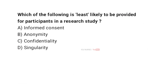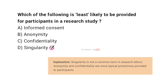Which of the following is least likely to be provided for participants in a research study? A. Informed consent. B. Anonymity. C. Confidentiality. D. Singularity. And the correct answer is D. Singularity. Singularity is not a common term in research ethics; anonymity and confidentiality are more typical protections provided to participants.